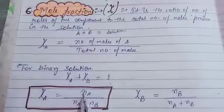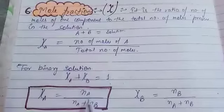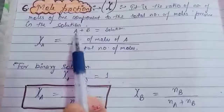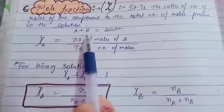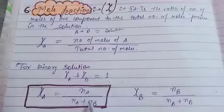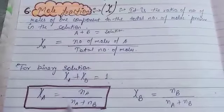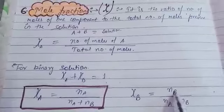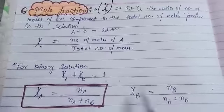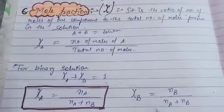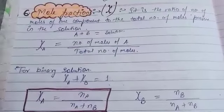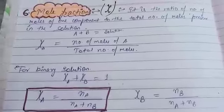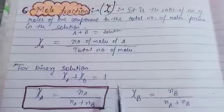Chi_A equals n_A upon total number of moles. Since the solution is formed by combination of two components only, it's n_A divided by (n_A + n_B). Similarly, mole fraction of B is the number of moles of B upon total number of moles. If a solution has three components, the denominator becomes n_A + n_B + n_C.